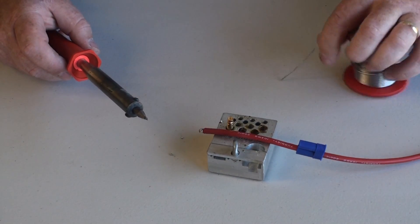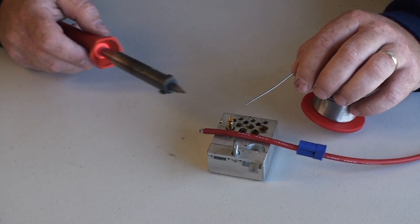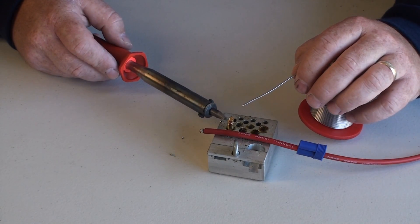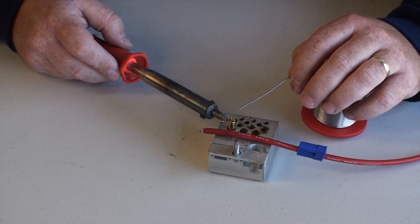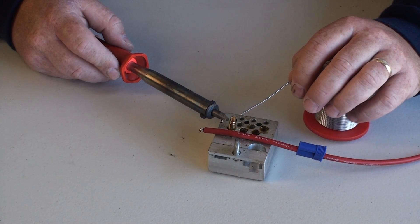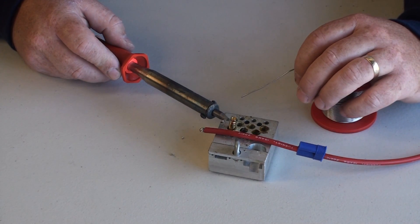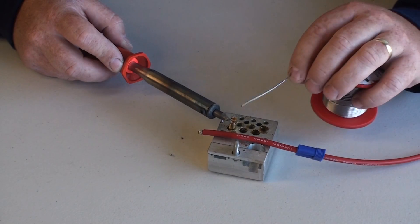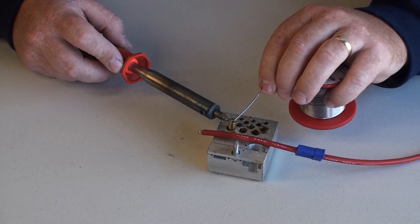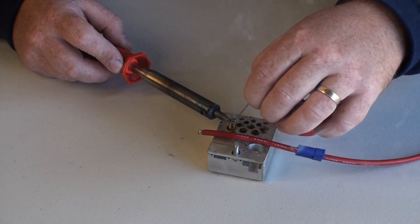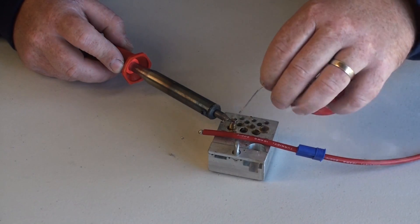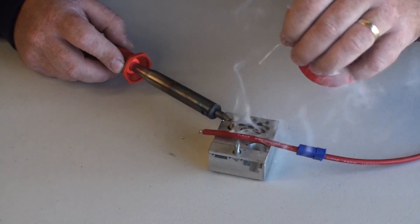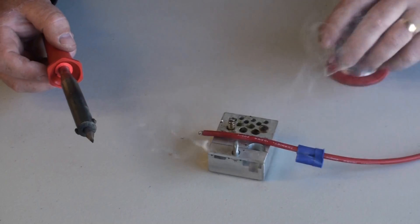Now we're going to tin the inside of the brass connector. What we need to do is apply heat to the connector. Once the connector gets hot, we then run solder inside it. Don't fill this right up because you don't want solder coming out. Around about half full is normally perfect. Then remove the heat.